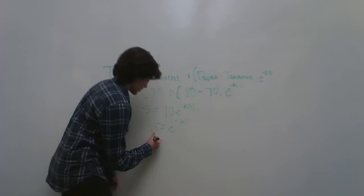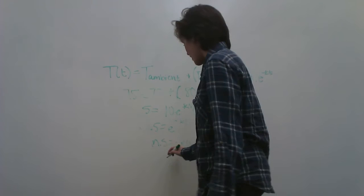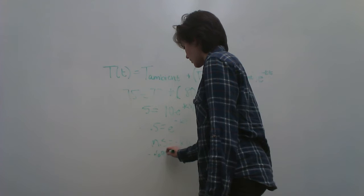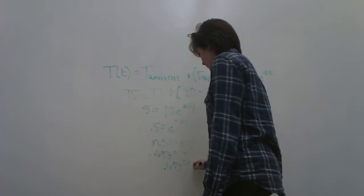To get the E out of the way, you're going to do your natural log. So natural log of 0.5 equals negative k1. And when you do this, you're going to get negative 0.693 equals negative k1. And you're just going to divide out the negative 1 and you get just a positive 0.693 equals k.